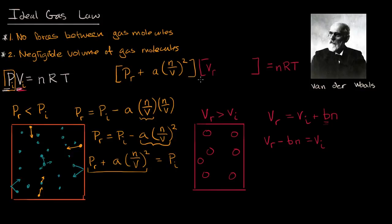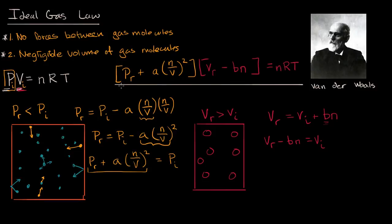Substituting back in, the ideal volume equals the real volume minus Bn. And this thing I've just generated is the van der Waals equation. The reason I went through this conceptual experiment is that when you first see the equation it looks really daunting — until you realize the first term is just the ideal pressure and the second term is the ideal volume, with adjustments between ideal and real based on forces between particles and the actual volume of the particles. The van der Waals equation is not perfect, but it's the next step beyond the ideal gas law to get a little more realistic. You can continue to modify it with computer models and other approaches for even more accuracy, but the van der Waals equation is a good start.